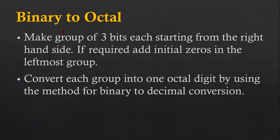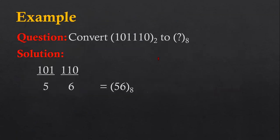First we are going to learn how to convert binary to octal using a shortcut method. There are two steps. Step one: make a group of three bits each, starting from the right hand side; if required, add initial zeros in the leftmost group. Step two: convert each group into one octal digit by using the method for binary to decimal conversion. By applying these two steps you can convert a binary number into an octal number.